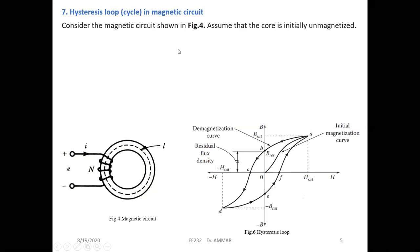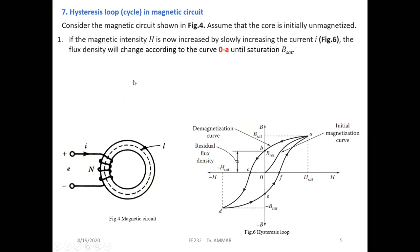We consider the magnetic circuit shown in figure four — we have a core with a coil. At the beginning this core is initially unmagnetized. When we feed this core, H starts increasing. Let's go to the board.